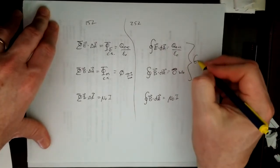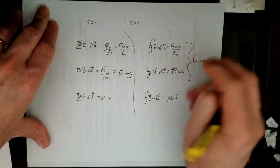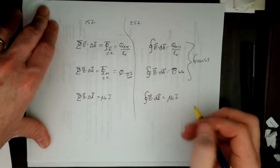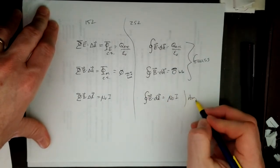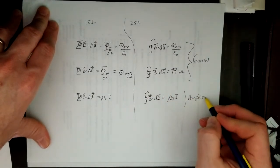So this is Gauss. Gauss's law of electricity. Gauss's law of magnetism. And this is Ampere's law. Ampere. Law.